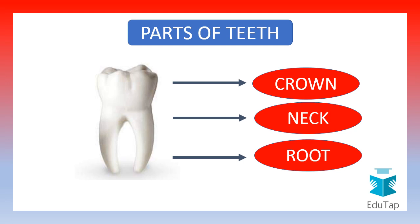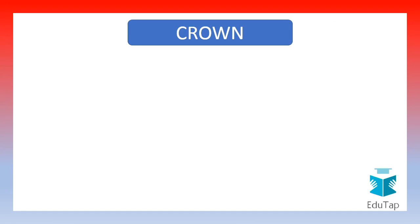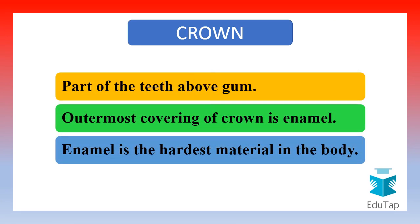Let us discuss a bit about the crown. It is the part of the teeth found above the gum. Its outermost covering is called enamel, and enamel is the hardest material in the body.